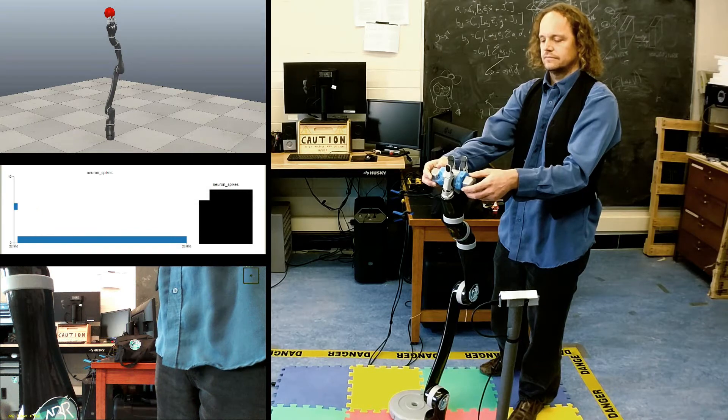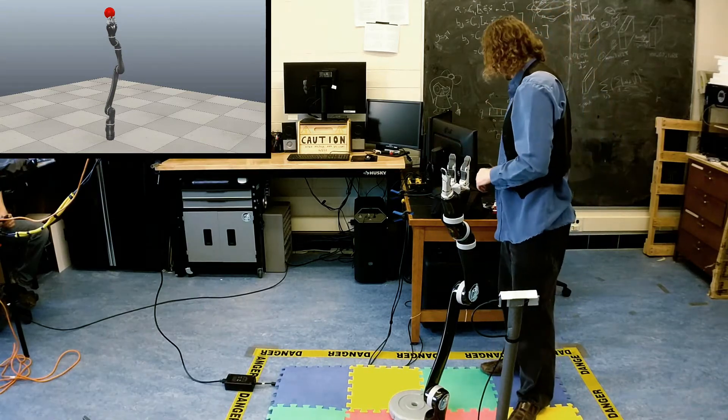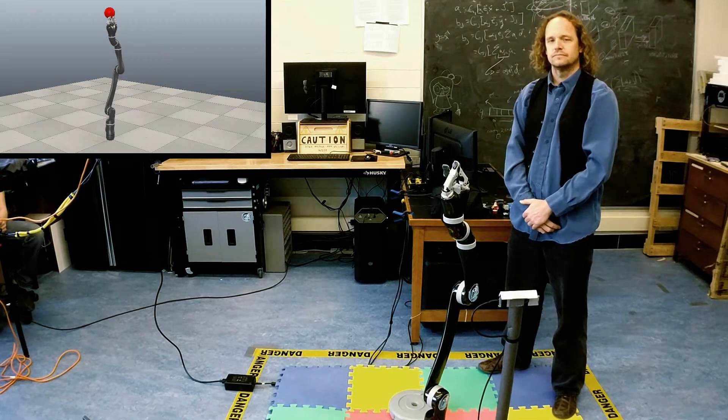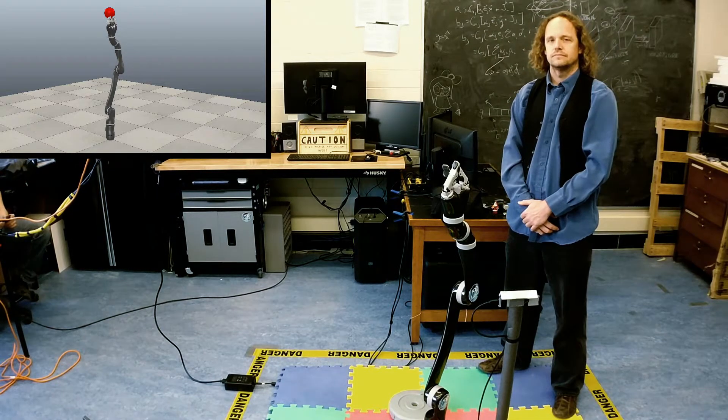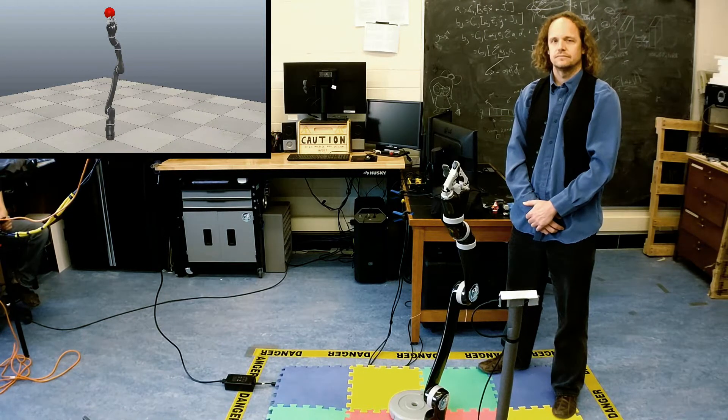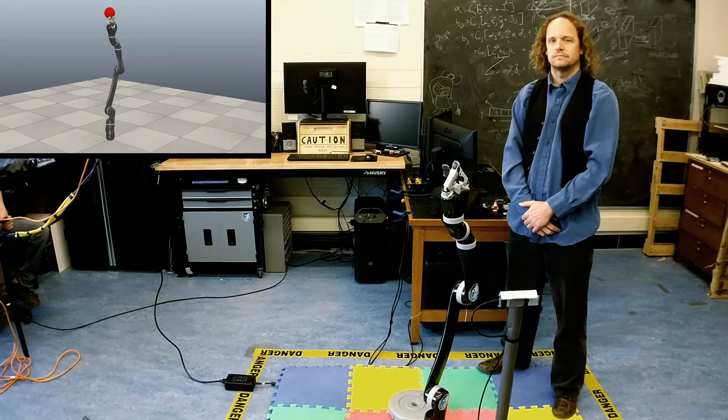The first part of our demonstration shows the difference between current standard control methods, state-of-the-art compliant control methods, and adaptive control methods that ABR has developed. These three different controllers are best understood by interacting with them while the robot is attempting to maintain a target location.